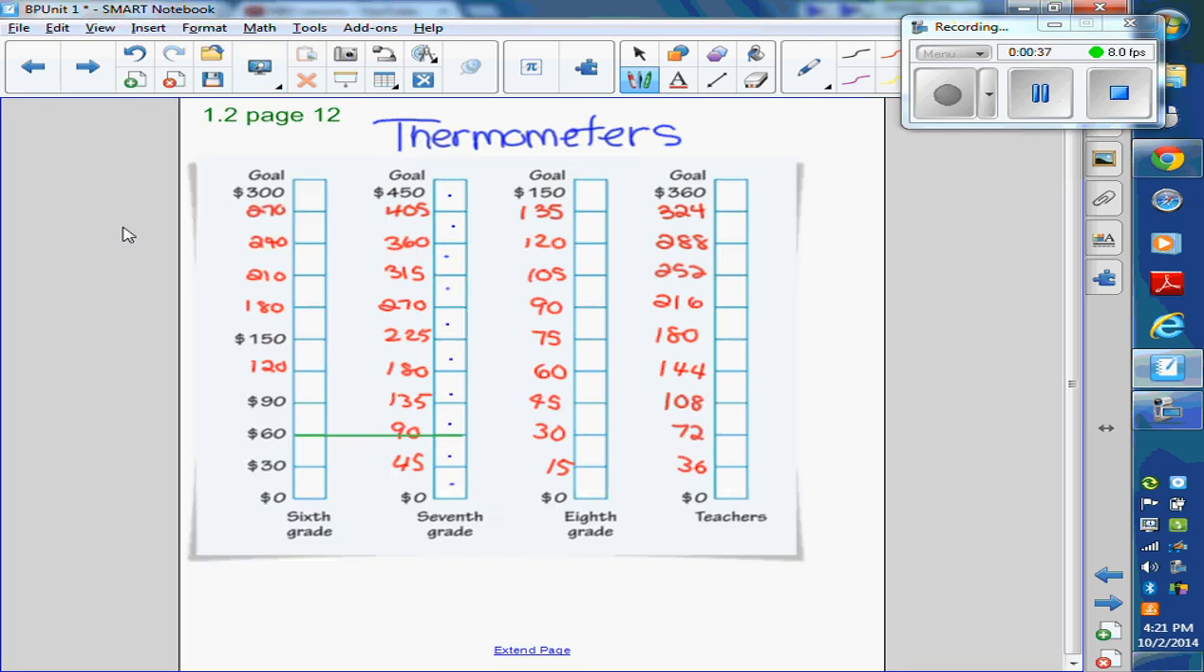So for example, on the 7th grade thermometer, let's zoom in there. To figure out all the missing numbers, we took the goal value of 450 divided into 10 equal parts. 450 divided by 10 is 45, so we found this first number here and we counted by 45. 45 plus 45 is 90.